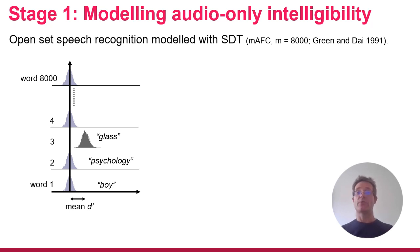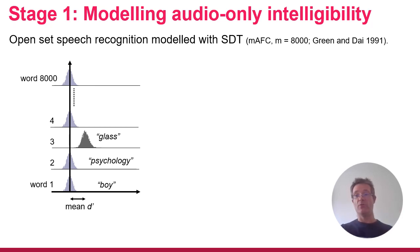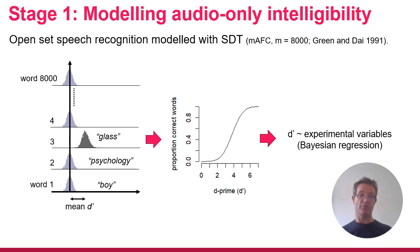In our task, participants must identify a word which could be any word in the English language. We use a signal detection model which assumes that a single noisy internal variable exists for representing each word. The listener's task is to choose the word with the highest internal variable value. From this we can derive a relationship between the average value of this variable — effectively our d' — and the probability of getting the answer correct. This then becomes a link function in a Bayesian regression model.